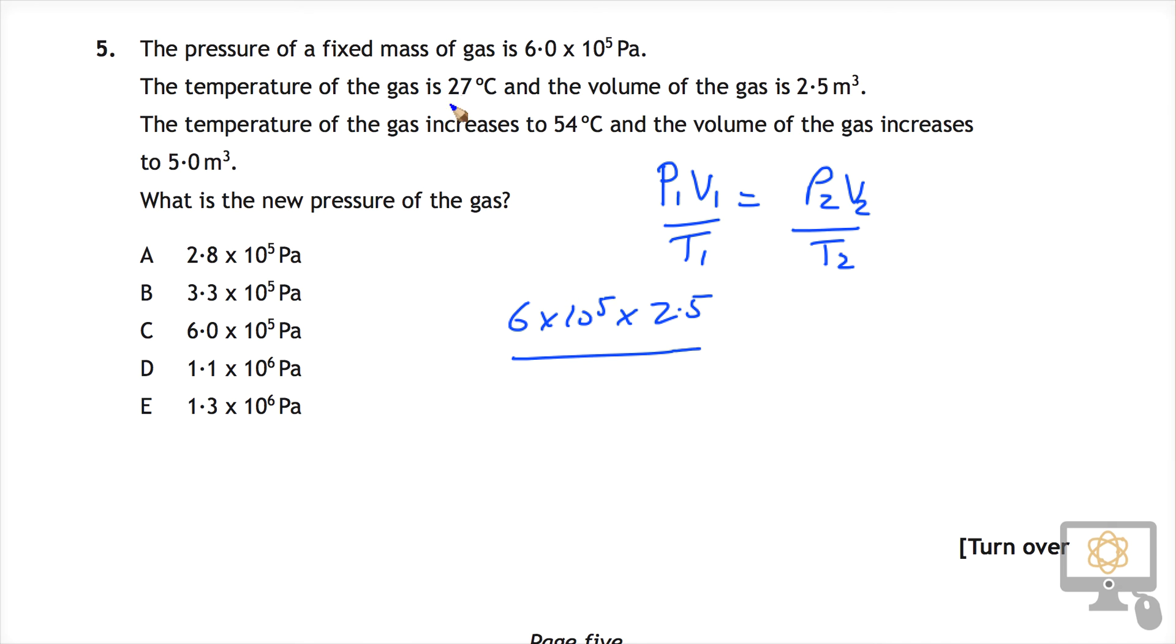Now the initial temperature is 27 degrees, however we have to include our temperatures in Kelvin. We need to add 273 to that number, because 0 degrees Celsius is 273 Kelvin. So 27 degrees Celsius is 273 plus 27.